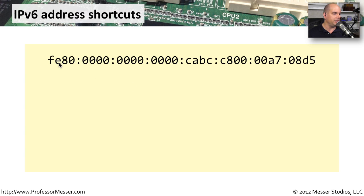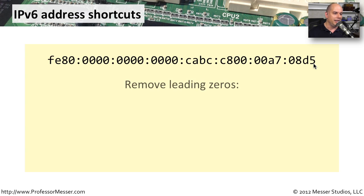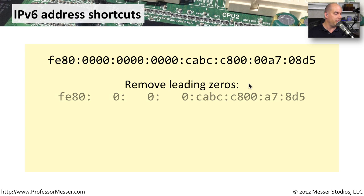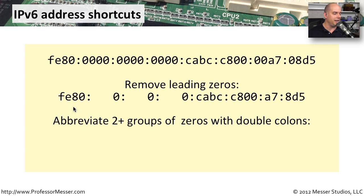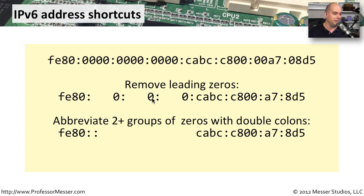Let's look at this IP address: FE80, a bunch of zeros, CABC, C8000087 08D5. That's a really long address. But fortunately, there are spots where we can start making abbreviations. Let's start with something easy — let's get rid of every place where there's a leading zero. There's a leading zero on this set of bytes and a zero at the end. Then, we can take any place where we have two or more groups of zeros and abbreviate them with a double colon. You can only do this one time inside of an address — you can't have multiple double colons. So if we've got a zero and a zero and a zero, we can get rid of all of those and simply replace it with a double colon.